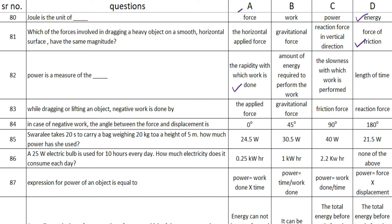The next one is: while dragging or lifting an object, negative work is done by blank — and the answer is option B — gravitational force. The next one: in case of negative work, the angle between the force and displacement is — and the answer is option D —